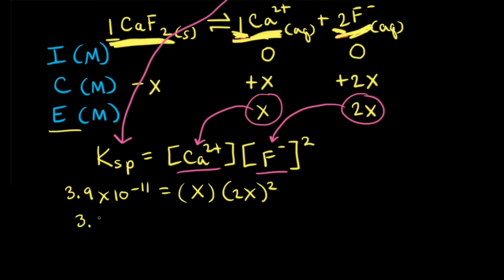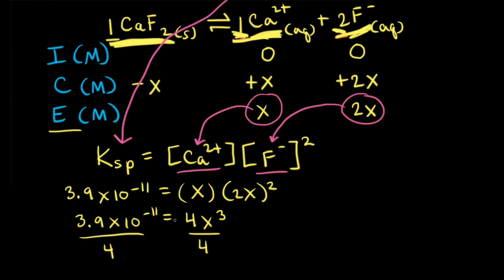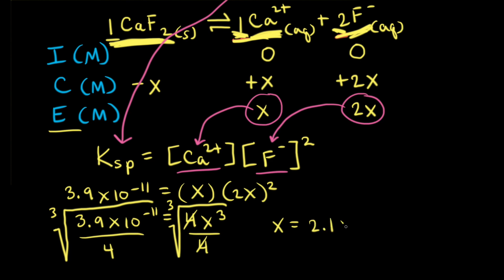Next, we need to solve for X. So 3.9 times 10 to the negative 11th equals X times (2X) squared. Since 2X squared equals 4X², that gives us 4X³. To solve for X, we divide both sides by 4 and then take the cube root of both sides. That gives us X equals 2.1 times 10 to the negative 4th.